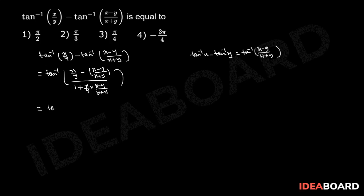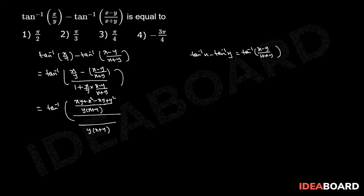That equals to tan inverse where, in the numerator, LCM is y(x plus y), giving xy plus x squared minus xy plus y squared. In the denominator, LCM is also y(x plus y), giving y(x plus y) plus x(x minus y).